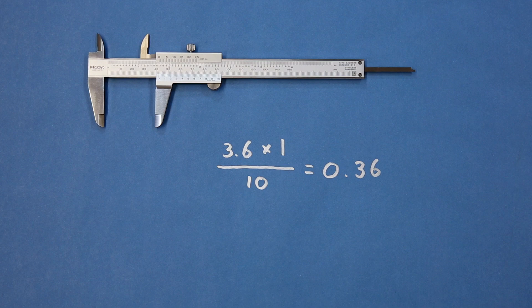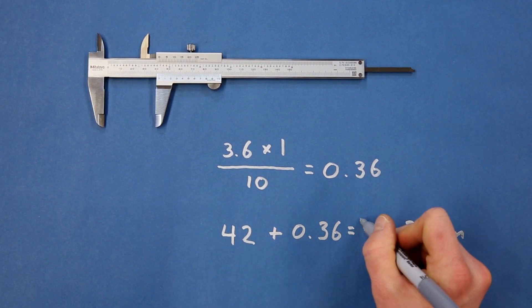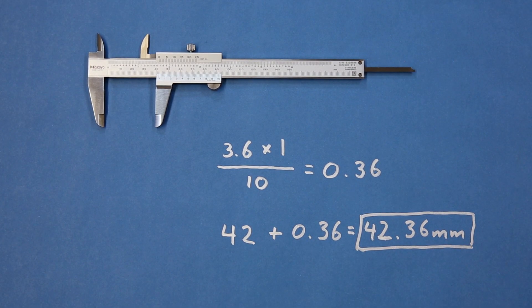For this example, we would get 0.36 millimeters on the vernier scale. Add that to the main scale reading, and you'd get 42.36 millimeters.